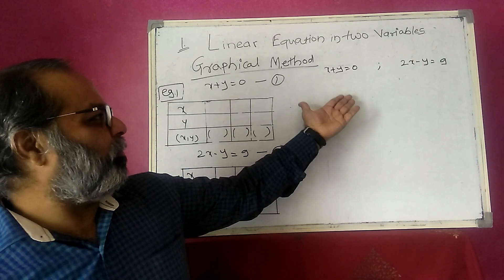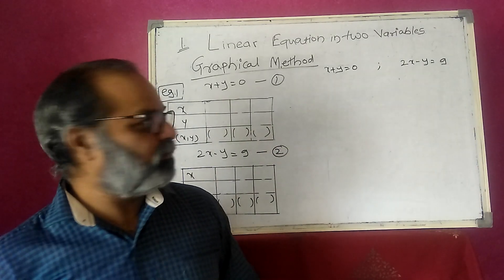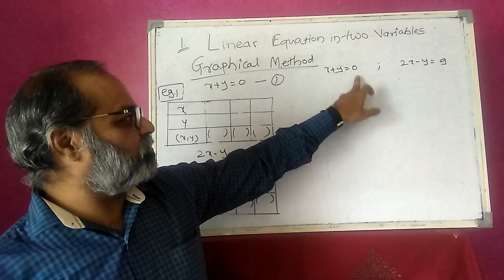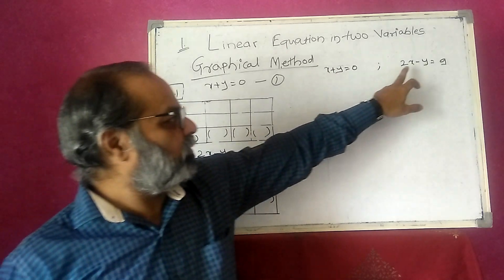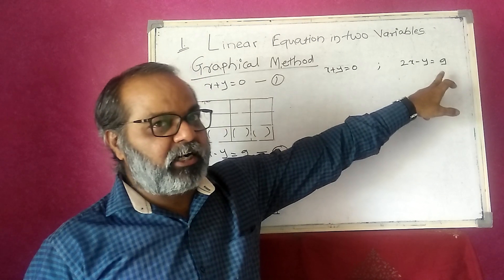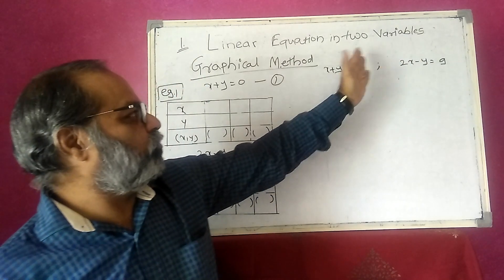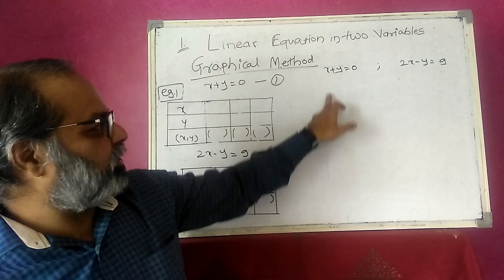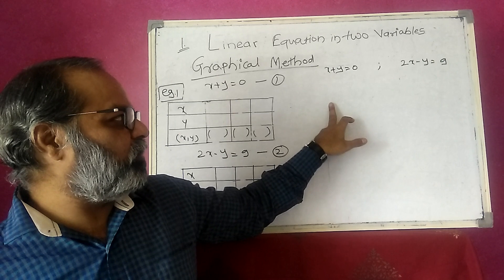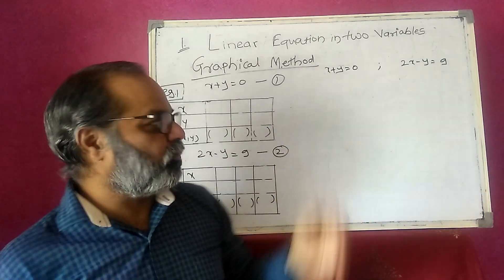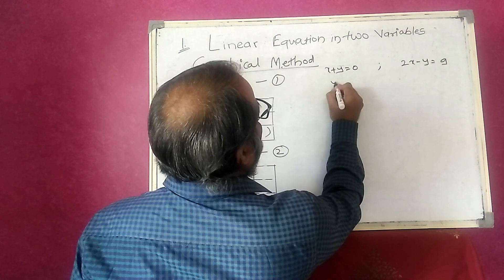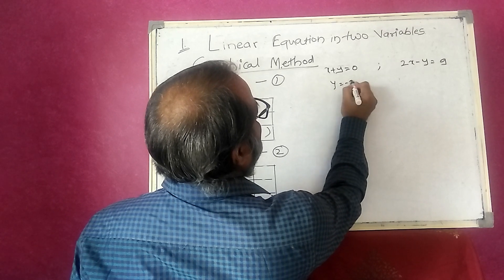Now we are taking another problem for practice and solving it by graphical method. The first equation is x plus y is equal to 0, and the second equation is 2x minus y is equal to 9. Convert each equation in terms of y and take any three convenient values of x to find y.